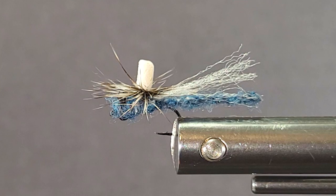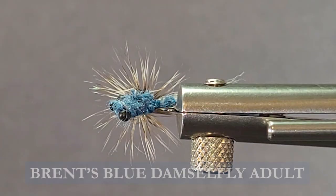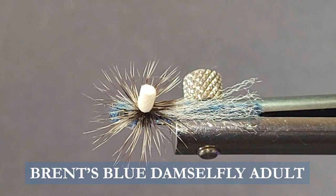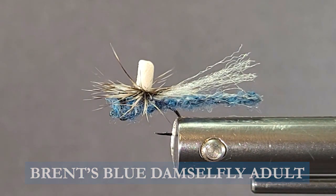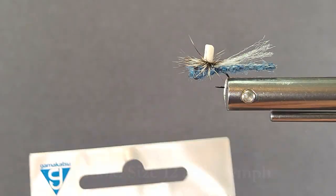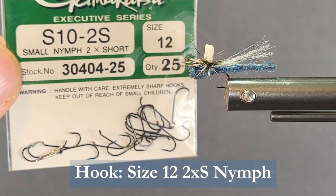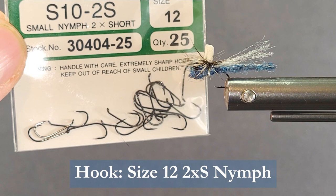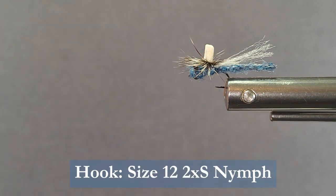Good day everyone. Today I'm going to tie up a little furled blue damsel dry fly. Nice little bug here, it's easy to tie with these materials. We'll be using the Gamagatsu S10-2S, this is a nymph hook, but it's actually a pretty light wire shank hook here, size 12.